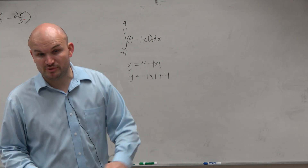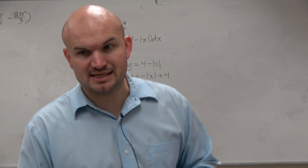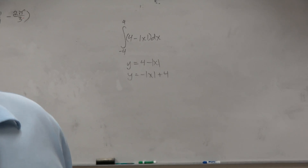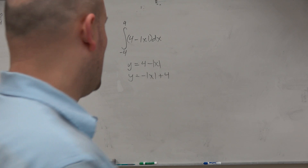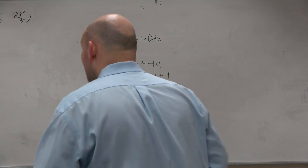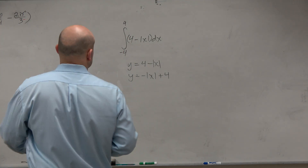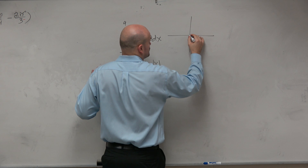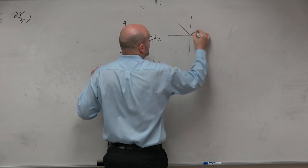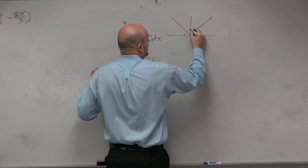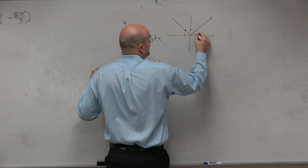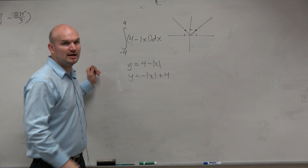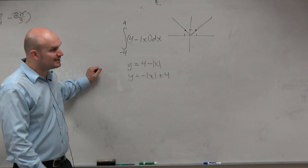Now the first thing we want to do is make sure we know what the absolute value function looks like. Remember from Algebra 2, that is the v-shaped graph. It goes up 1 over 1, up 1 over 1, and has a slope of 1 on both sides.